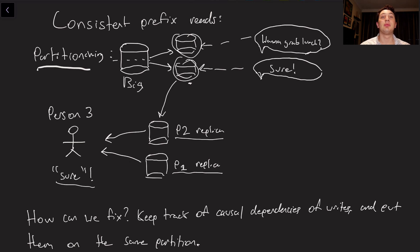So how can we go ahead and fix a problem like this? Well, basically, what this is known as is a causal dependency. The only reason that sure was sent in the first place is because it implicitly relies on the sending of want to grab lunch. Now, obviously it's kind of tricky in terms of how we can actually keep track of these causal dependencies, and for each application that would be specific.